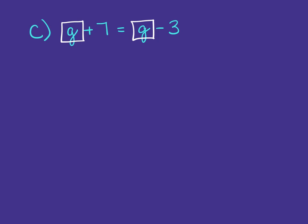So when I get rid of this G on the right side by subtracting G, it'll also end up getting rid of the G on the left side because what we do to one side of the equation, we do to the other. So they'll cancel on both sides. And we get 7 equals negative 3.